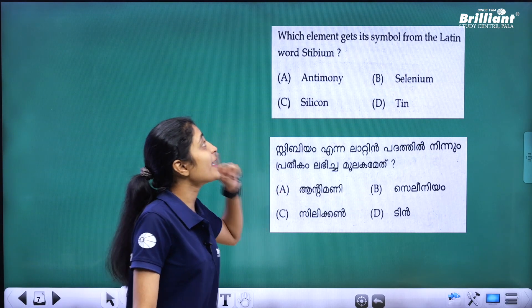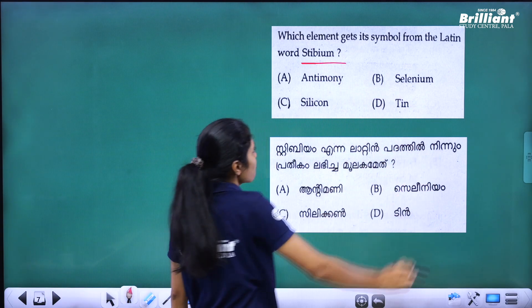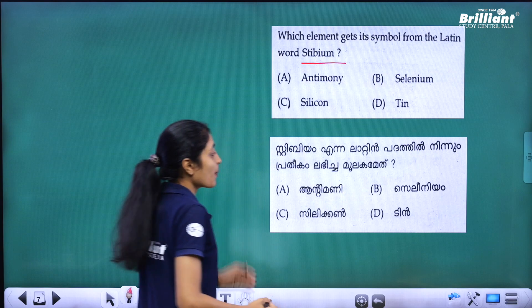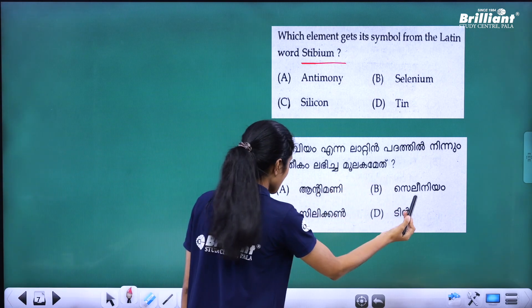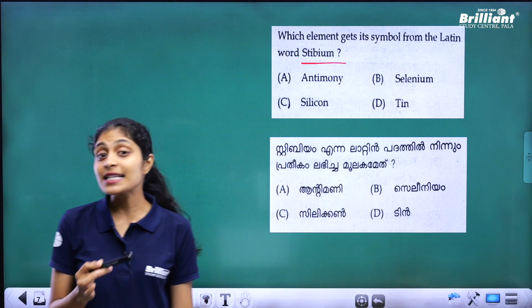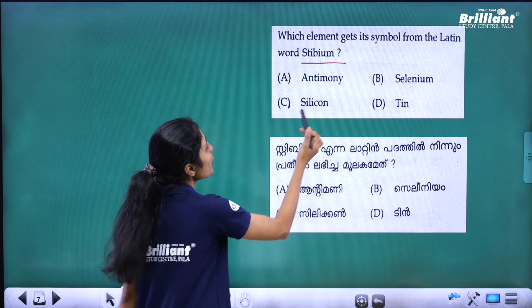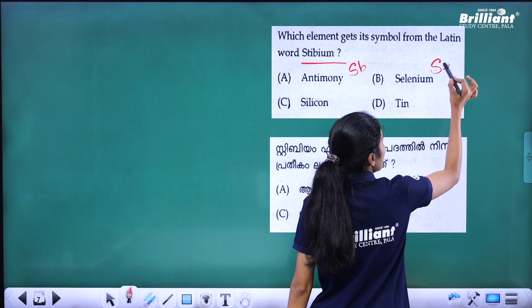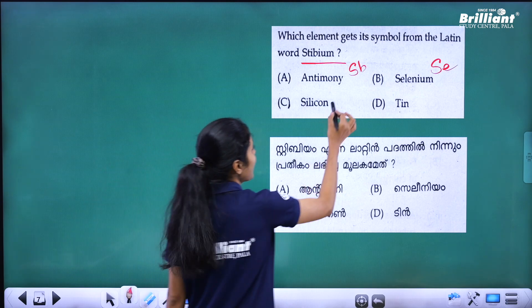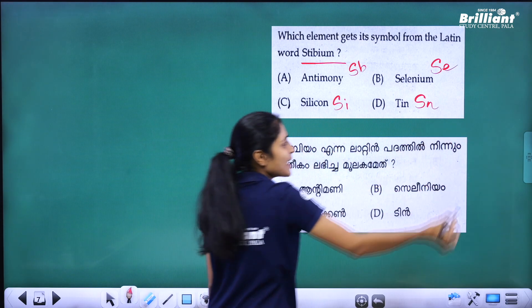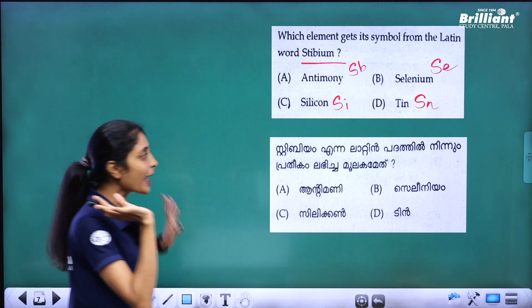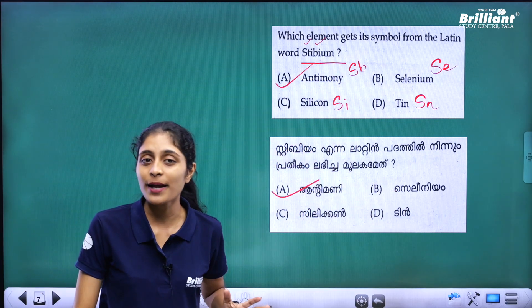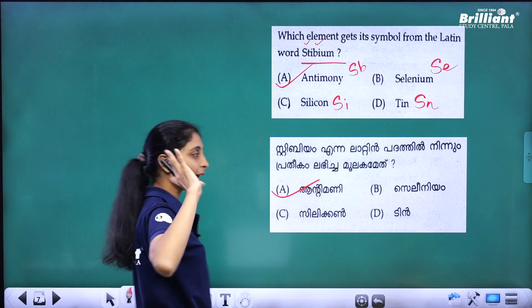Next question: which element gets its symbol from the Latin word 'stibium'? The four options are antimony, selenium, silicon, and tin. The symbol from 'stibium' is Sb, and Sb stands for antimony. So the answer is antimony.